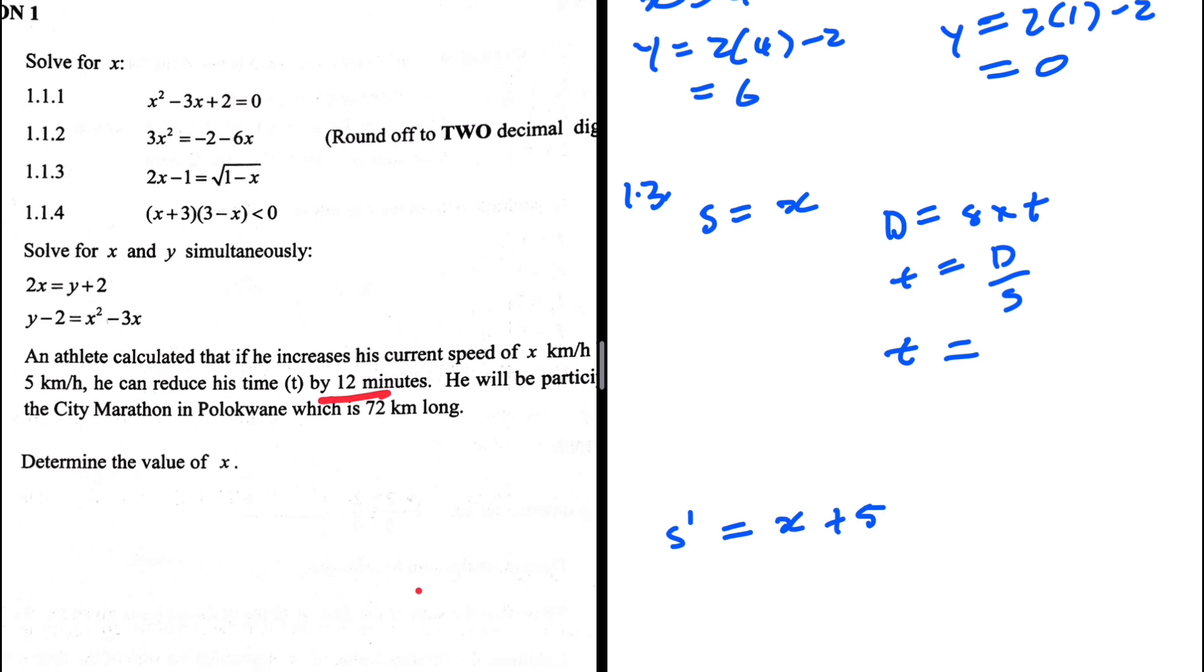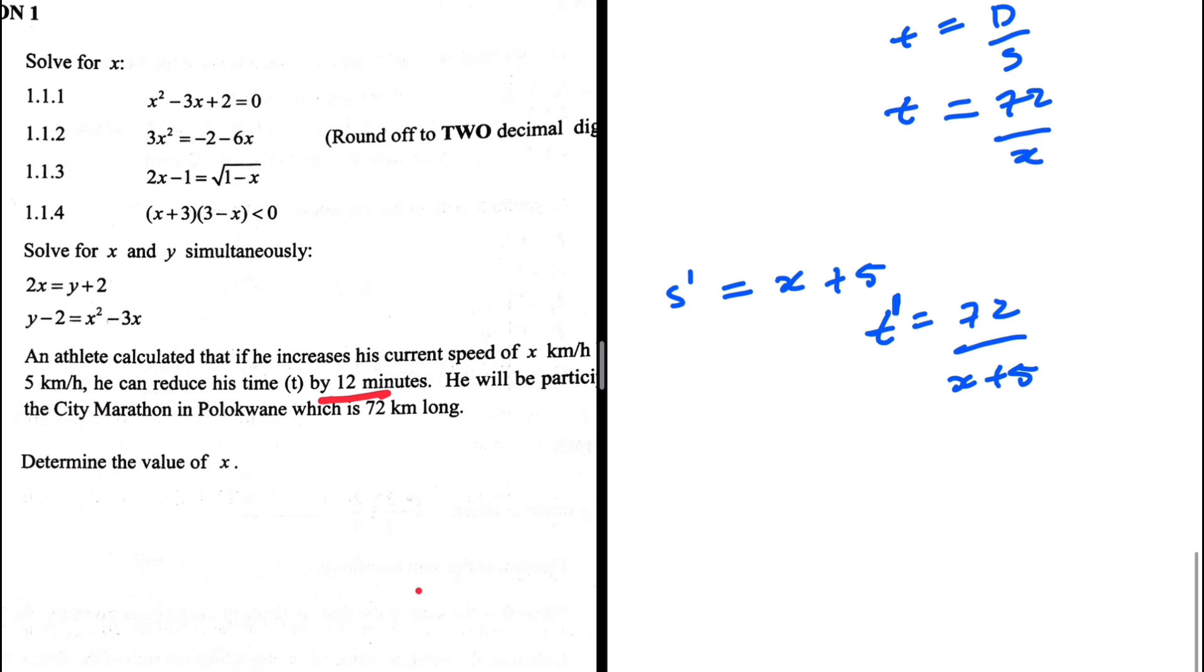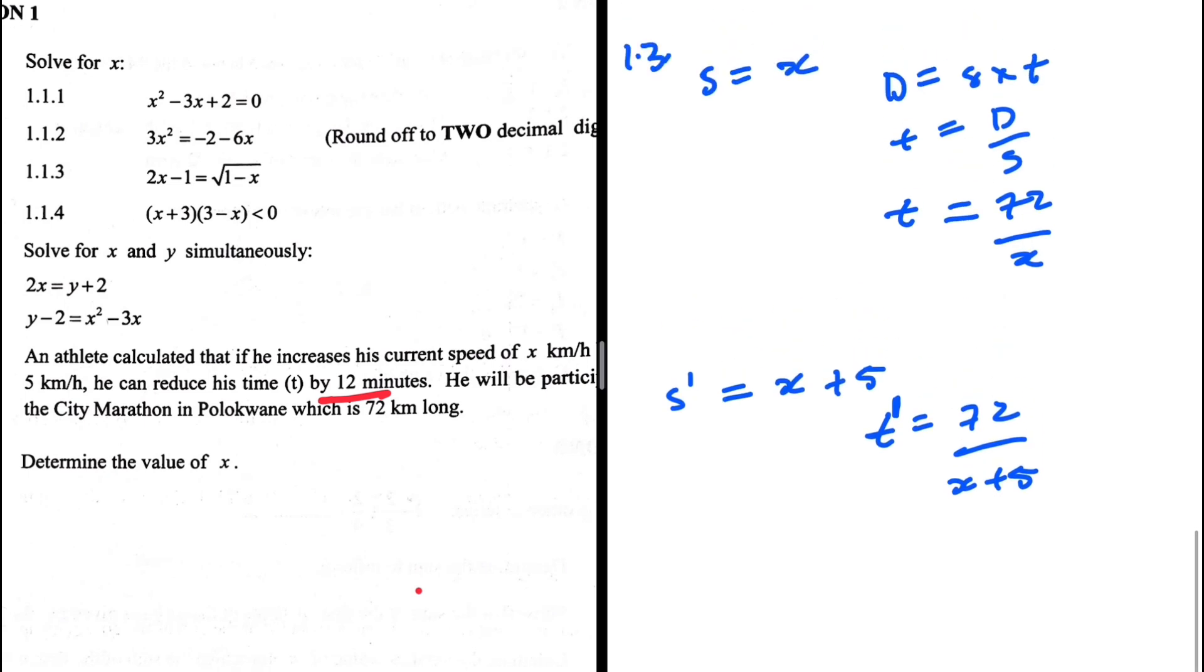And then when the speed is x plus five, the time will be 72, the distance, divided by the speed which is x plus five. So let's also differentiate this time because they're not going to be equal to each other, but we know that we reduce the time by 12 minutes when we increase the speed to x plus five.